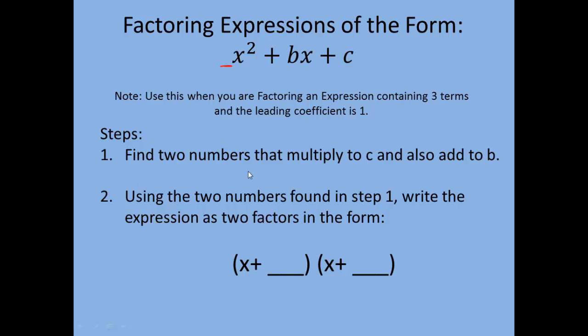Our first step is to find two numbers that multiply to c — meaning they multiply to whatever the last term is — and they also have to add to b, whatever that middle coefficient is.